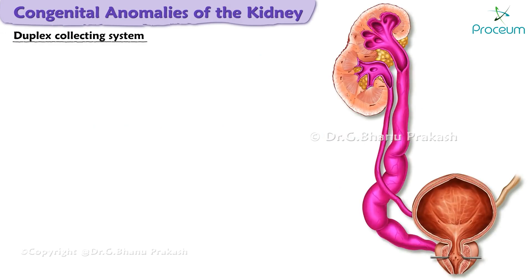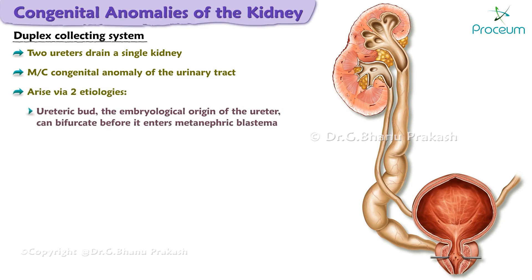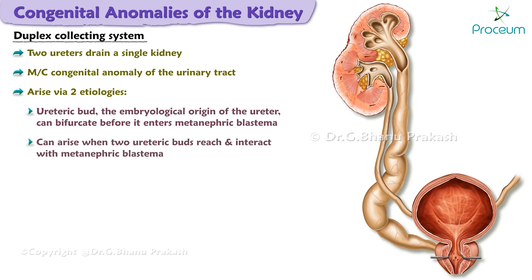Duplex collecting system is a condition in which two ureters drain a single kidney — it is the most common congenital anomaly of the urinary tract. Duplex collecting system can arise via two etiologies: the ureteric bud can bifurcate before it enters the metanephric blastema, or alternatively, two separate ureteric buds can reach and interact with the metanephric blastema.